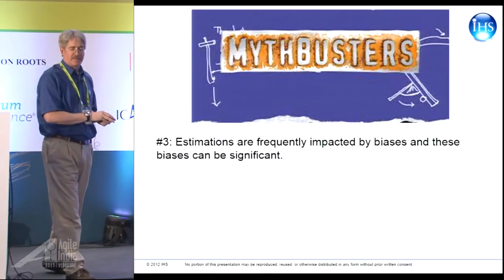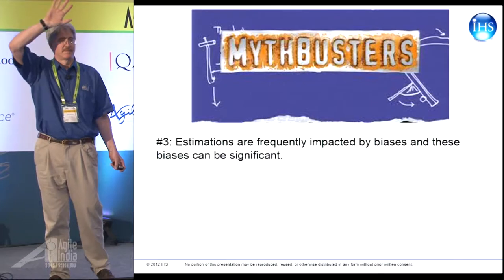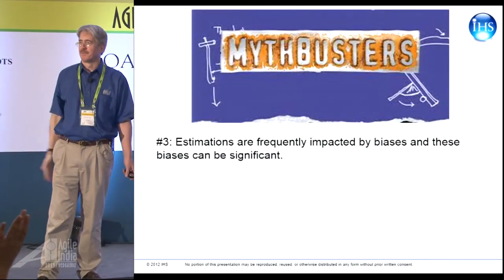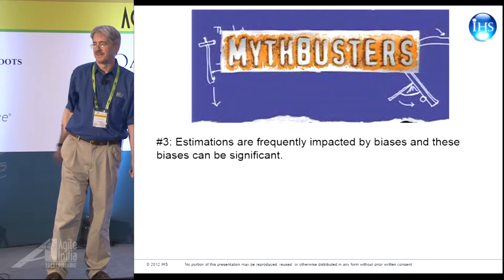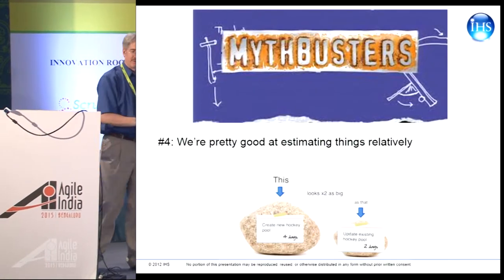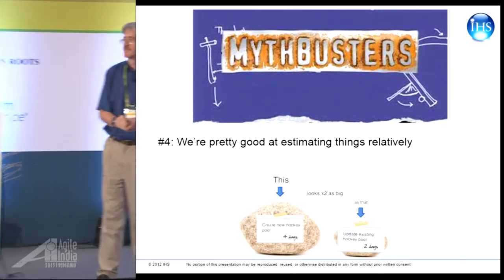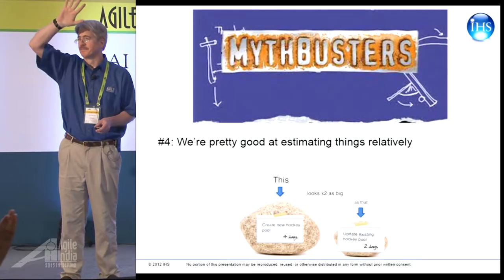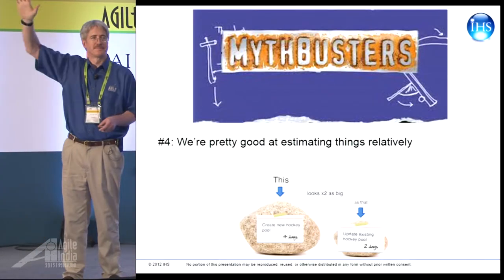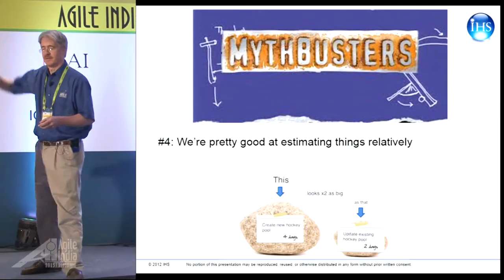Myth three: estimations are frequently impacted by biases, and these biases can be significant. Confirmed? Busted? Myth four: we're pretty good at estimating things relatively. I don't think that's confirmed. How about busted? A couple people said busted. Plausible?